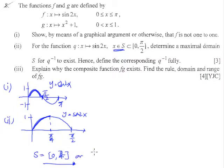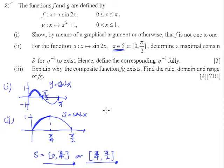Alternatively, from pi over 4 to pi over 2 — that part of the curve is also still 1-to-1. So to determine the maximum domain for s for which q-inverse exists, it's either 0 to pi over 4 or pi over 4 to pi over 2. Hence we define the corresponding q-inverse, which is actually not that difficult.